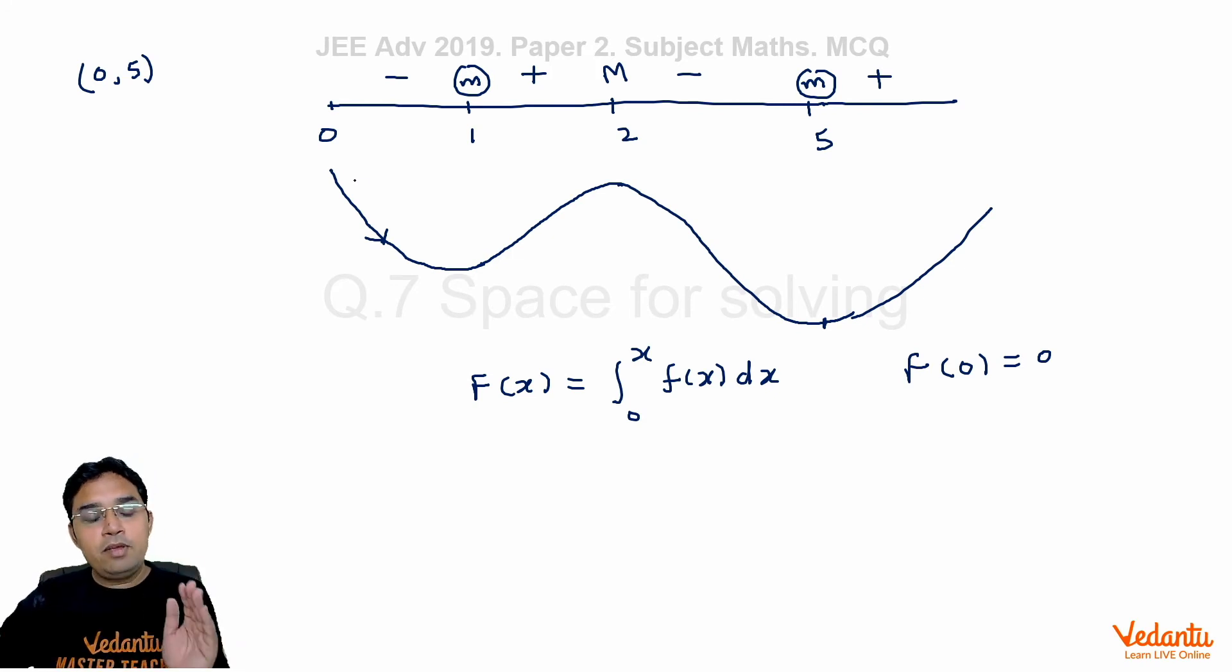Now one very interesting and important thing here is that while going from 0 to 1, the function is going down. So if at 0 it is zero, it will be having value less than zero from 0 to 1. After 1 it will start increasing, and it will have maximum value at 2. Now if we are able to find what is the value of F(2), then we may be able to predict whether it will become equal to zero or not.